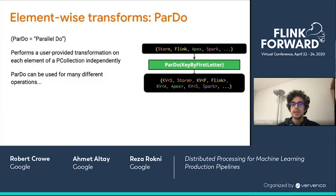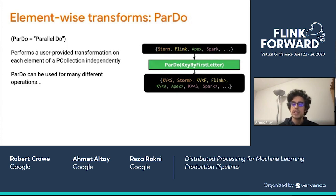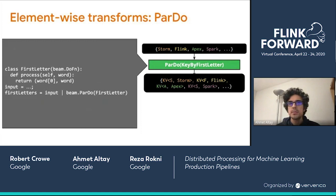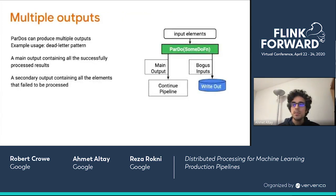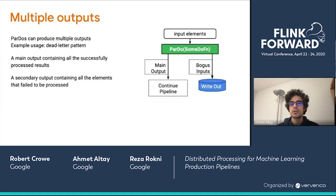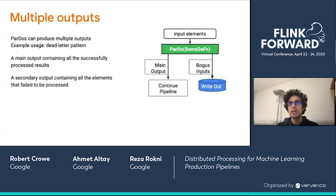One of the core element-wise transforms in Beam is ParDo. In this example, a DoFn named 'key by first letter' takes an input P-collection with elements storm, Flink, Apex, Spark, and its output P-collection has key-value pairs mapped to their first letter. It's also possible to produce multiple outputs from the same ParDo — for example, if your ParDo is dealing with parsing and certain items are unparsable, those elements can go to another collection like a dead-letter queue. You can get an exact list of unprocessable elements, allowing you to either improve your ParDo or clean up your data.